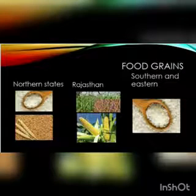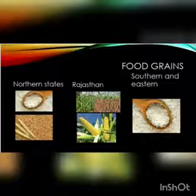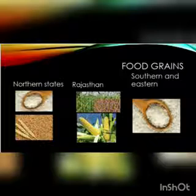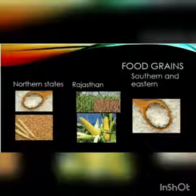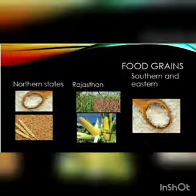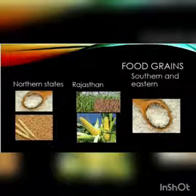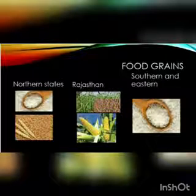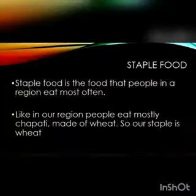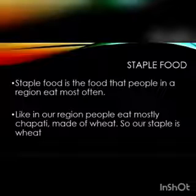Food grains are the cereals like wheat and rice. In the northern states of India, people generally eat wheat and rice. In Rajasthan and Punjab, people eat wheat, jwar, corn and bajra. In southern and eastern states, people eat mostly rice. So by this we come to know that people mostly eat food that is grown in their region. These foods are known as staple food.